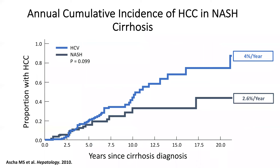Liver cancer, or hepatocellular carcinoma (HCC), is also a complication of fatty liver disease, especially when it progresses to cirrhosis. In a study comparing patients with cirrhosis from hepatitis C versus NASH, the yearly rate of developing liver cancer was about 4% for hepatitis C cirrhosis and 2.6% for NASH cirrhosis — still significant. That's why if you have cirrhosis from fatty liver, it's so important to get an ultrasound every six months and blood work to screen for liver cancer.